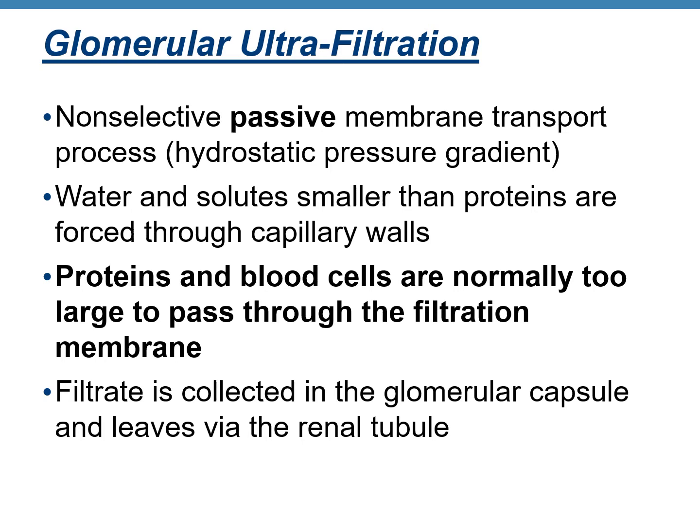Proteins and blood cells are too big to be filtered out, so they stay in the blood. The filtered fluid collected in the Bowman's capsule — the filtrate — is drained into the renal tubule. The first part of the renal tubule is the PCT.